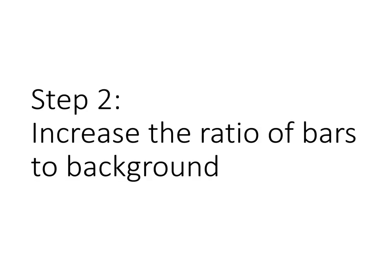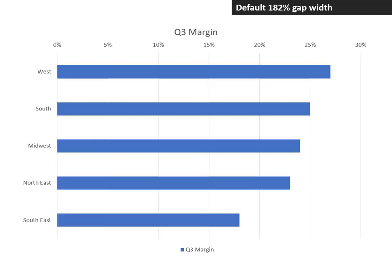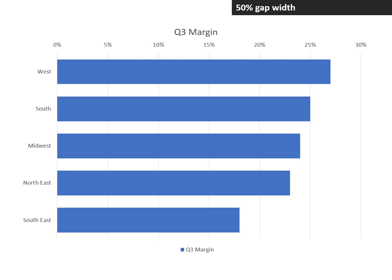Step two is to increase the ratio of the bars to the background. By default, the bars don't take up nearly as much space as the background. That's because the gap width setting is set to 182%. The gap width is the measurement of the gap between adjacent bars, and the percentage refers to the percentage of the width of the bar — so the background is more than one and a half times as wide as the bar. I suggest we set it to 50% gap width, so the bars have more presence on the chart and are the focus of the audience.